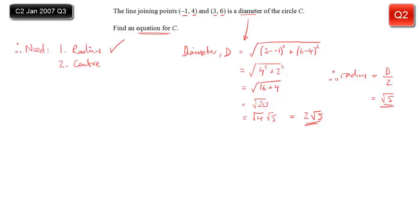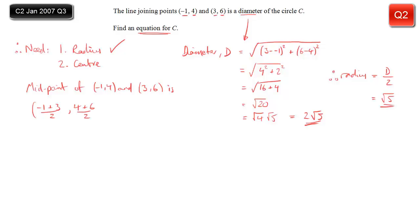Now we need the centre. Since the two points form a diameter, the centre of the circle is the midpoint of those two points. We calculate the midpoint of minus 1, 4 and 3, 6 by finding the mean of the x-coordinates and the mean of the y-coordinates. Minus 1 plus 3 divided by 2 is 1, and 4 plus 6 divided by 2 is 5. So the midpoint — and therefore the centre — is (1, 5).